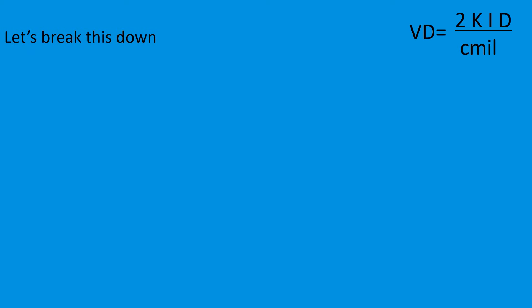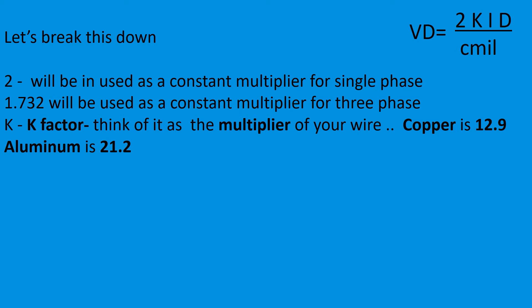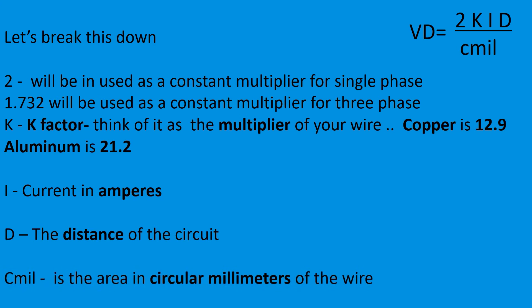Okay, so let's break this down. 2 will be used as a constant multiplier for single phase. 1.732 will be used as a constant multiplier for three phase. The K is K factor. Think of it as the multiplier of your wire. Copper is 12.9 and aluminum is 21.2. I represents current in amperes, and D is the distance of the circuit. Cmils is the area in circular millimeters of the wire.